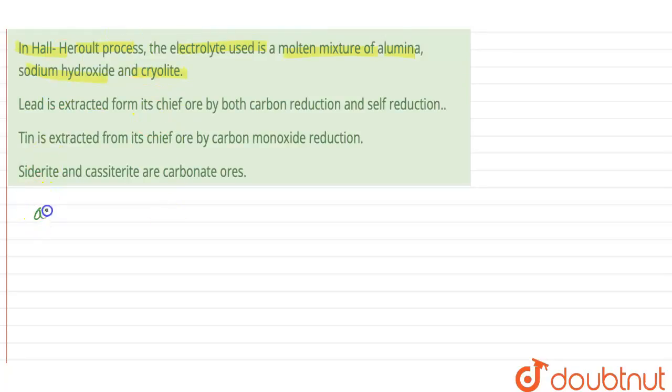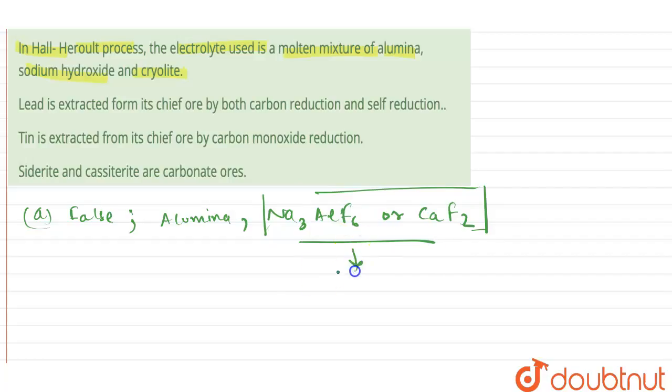Because in that process we are going to use alumina with Na3AlF6 or CaF2. What they will do is they will lower the melting point of alumina and also increase the conductivity.